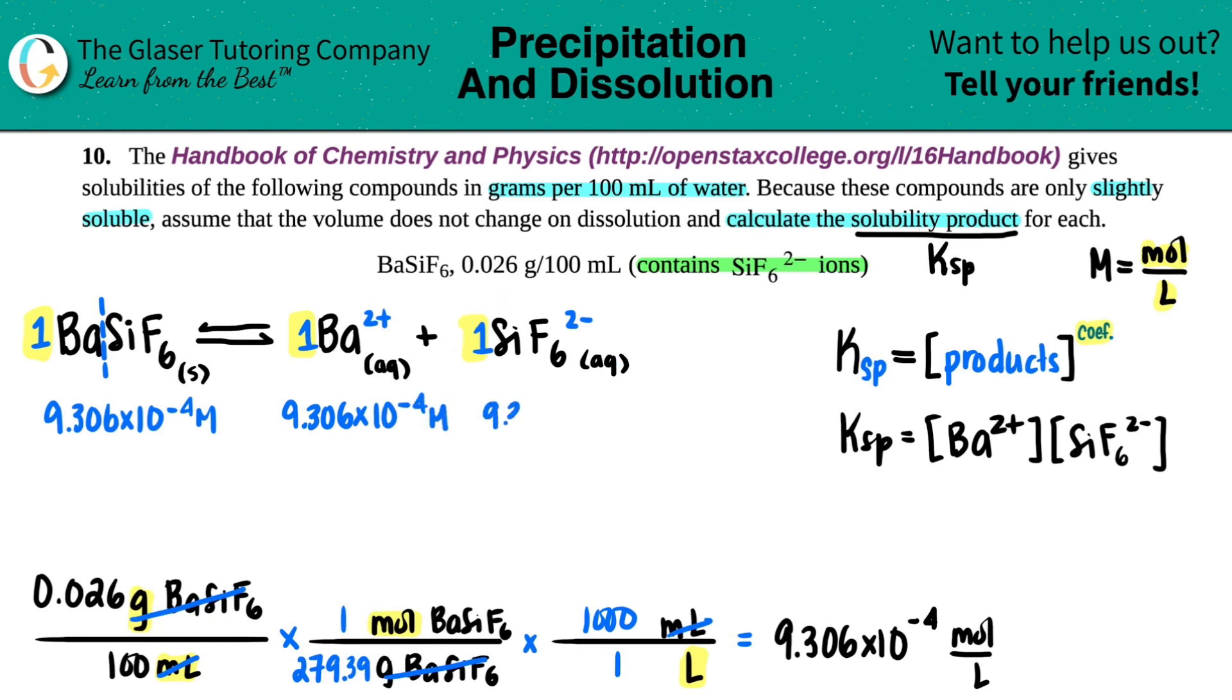Now since we have both molarities for the two ions, I could finally plug it in into my Ksp equation. So let's go for it. Ksp equals the two numbers multiplied by each other. So we have 9.306 times 10 to the negative fourth, and then 9.306 times 10 to the negative fourth. And finally, from that, we can get our Ksp value. 9.306 times 10 to the negative seventh. No units for Ksp. And that's the end.